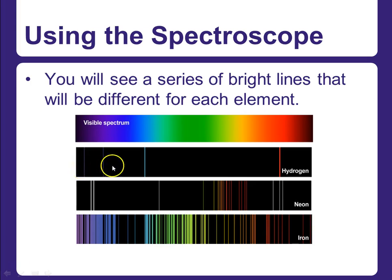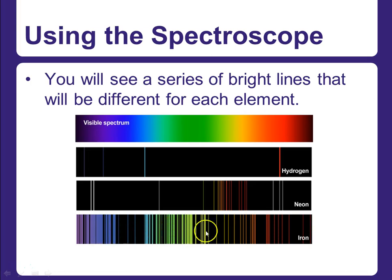For hydrogen, you'll only see four lines. For neon, you'll see considerably more lines. For elements like bromine and argon, you'll see lots and lots of lines. You're going to try to copy down as best you can the lines that you observe. It's also super helpful to hold the spectroscope level while looking at the light source — try not to angle it up or down, keep it as level as you can while observing.